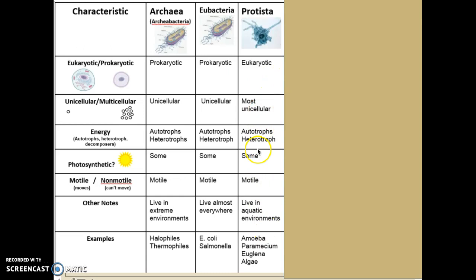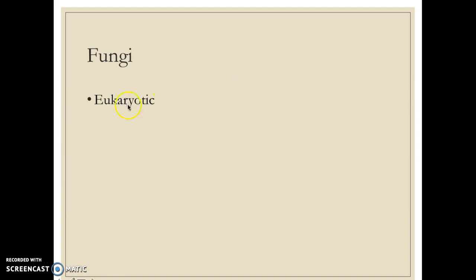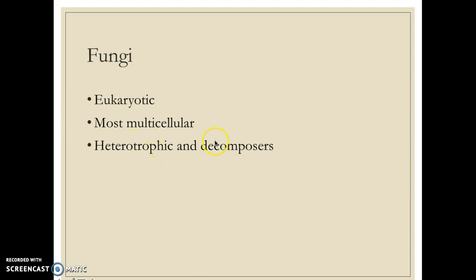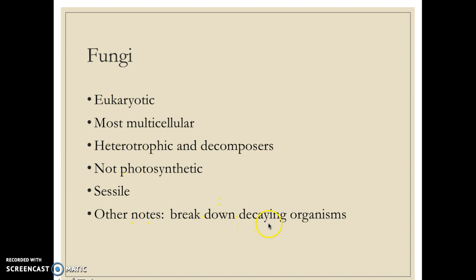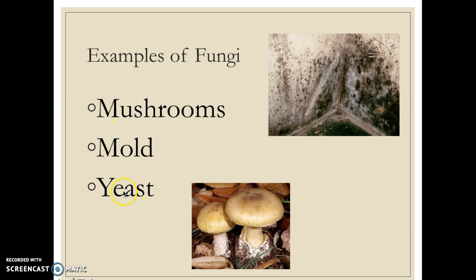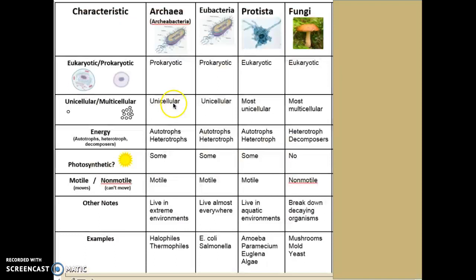Moving on to fungi — fungi are eukaryotes. They are mostly multicellular, heterotrophic, and also decomposers. Mushrooms do not do photosynthesis; they must consume their food. They are sessile — they do not move around much and are stuck to their place, mostly breaking down and decaying organisms. Examples include yeast, mold, and mushrooms. These are all examples of kingdom fungi.